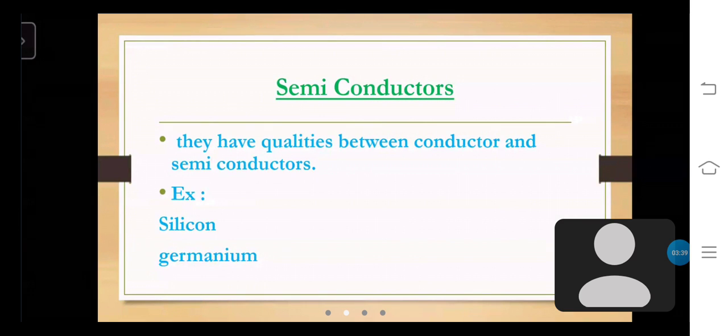Semiconductors: They have properties between conductor and insulators. Examples are silicon and germanium.